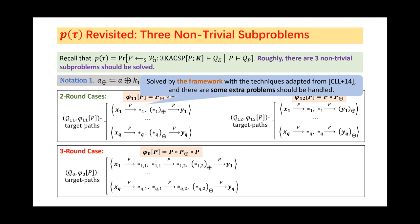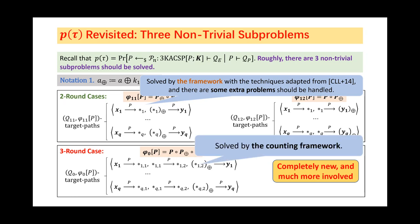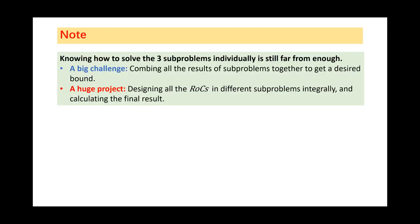The third one is a three-round case, where the construction is Φ₀. This problem is completely new and much more involved than the two-round cases. Fortunately, we can still solve it with the general framework. We should point out that knowing how to solve the subproblems individually is still far from enough. More specifically, it is a big challenge to combine all the results together to get a desired bound. To do that, we should design all the ROCs in different subproblems integrally. And it is indeed a huge project. There are numerous technical specifics in the formal proof. We refer you to the paper on ePrint for more details.